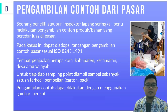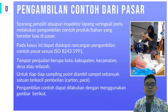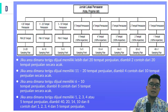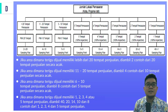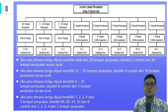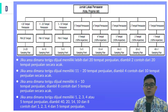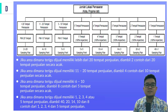Tempat penjualan berupa kota, kabupaten, kecamatan, desa, atau wilayah. Untuk tiap-tiap sampling point, diambil sampel sebanyak satuan terkecil pembelian, baik karton ataupun pack. Contohnya untuk produk terigu: jika area memiliki lebih dari 20 tempat penjualan, maka diambil 2 contoh dari 20 tempat penjualan secara acak; jika 11–20 tempat penjualan, maka diambil 4 contoh dari 10 tempat penjualan secara acak; jika 6–10 tempat penjualan, maka harus diambil 8 contoh dari 5 tempat penjualan secara acak.